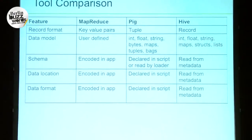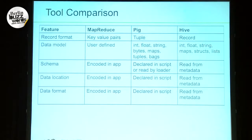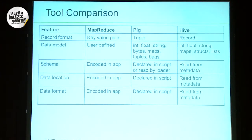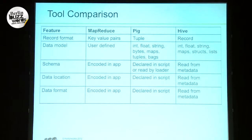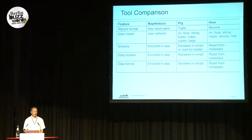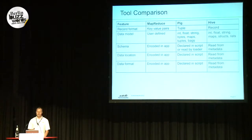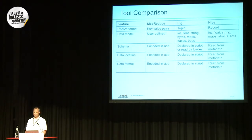It's not just that sharing data between these tools is hard — these tools don't even think about data in the same way. MapReduce thinks about data as a set of key-value pairs. Pig and Hive think about them as tuples or records, like a database server would. MapReduce doesn't give you any data model at all — you just impose whatever you want. If you have a metadata server like Hive has, schema, data location, and storage format are all encoded for you. If you're using MapReduce, Pig, or Cascading, you have to know all that and encode it in your application or script.